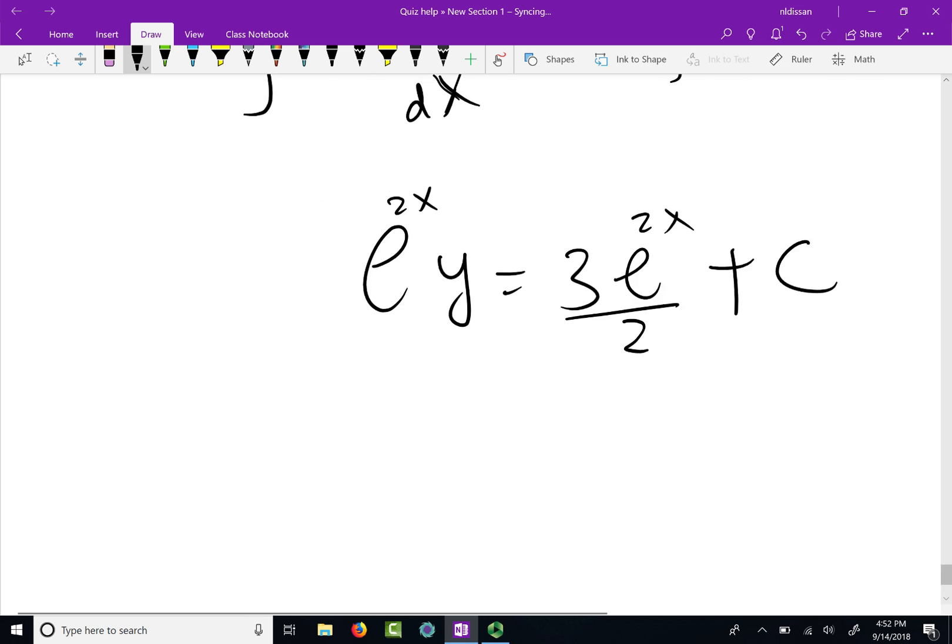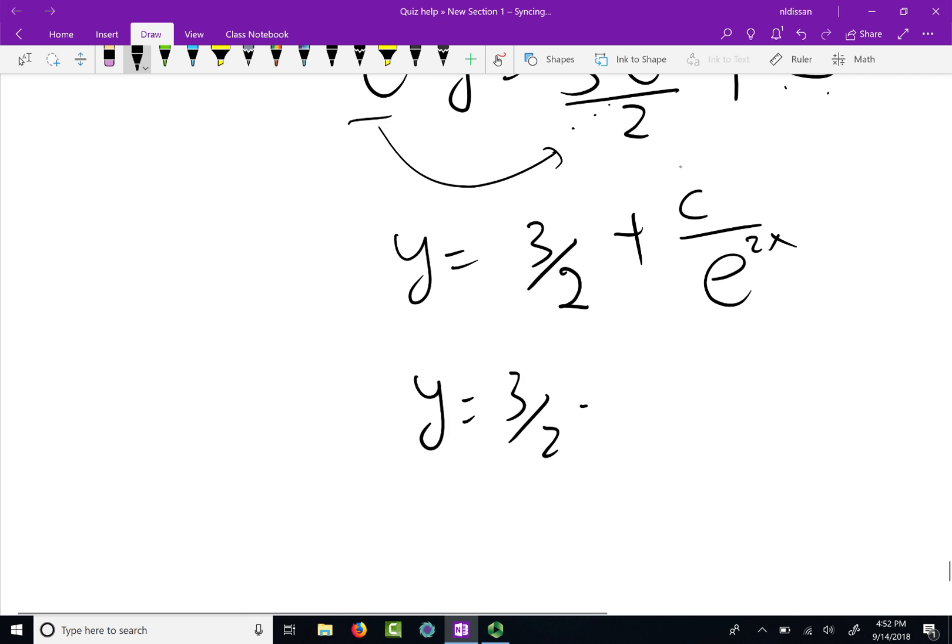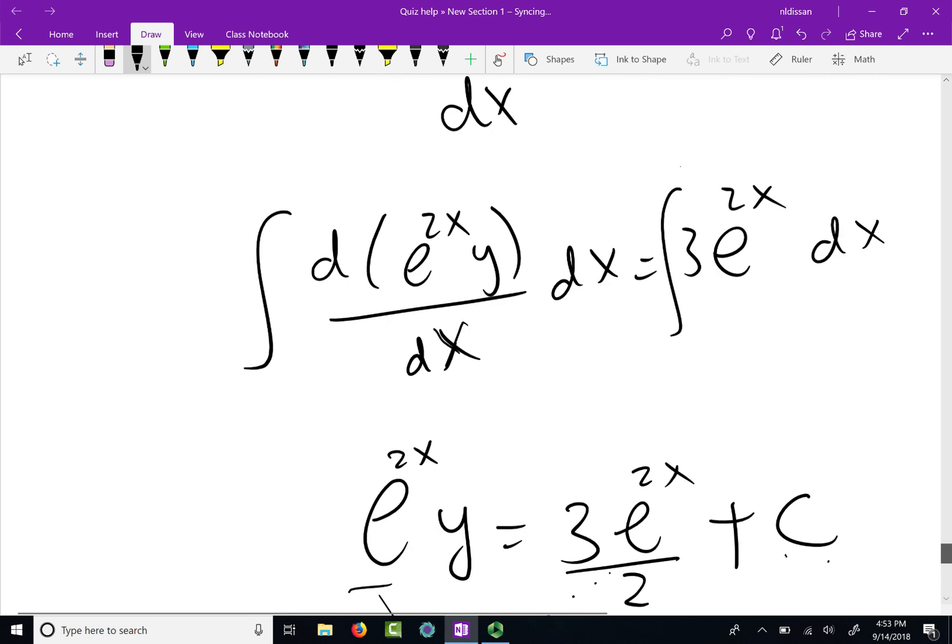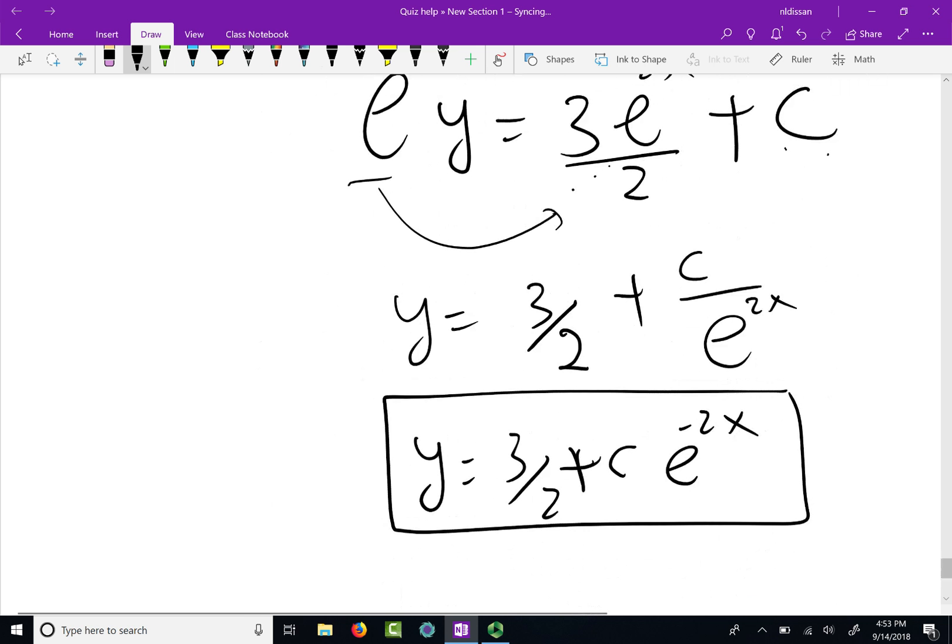So let's divide by e to the 2x both sides to get y. So if you divide each term by e to the 2x, here will become 3 over 2, e to the 2x over e to the 2x cancel out, c over e to the 2x, which we can write as 3 over 2 plus c e to the negative 2x, and that is my final answer. So that is how we use integrating factor to solve a problem. All right, see you in next video for more examples.